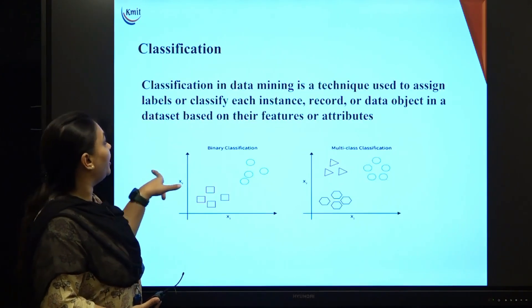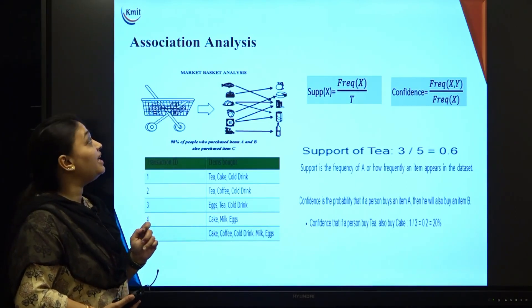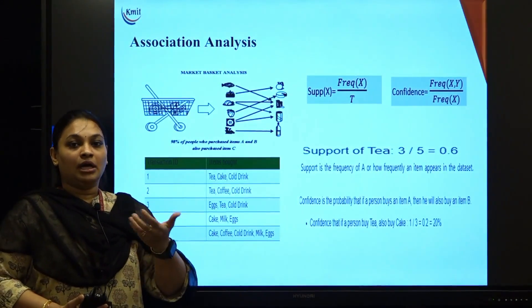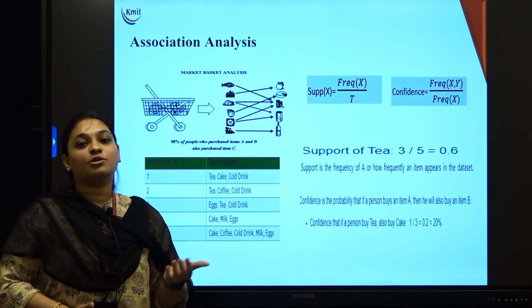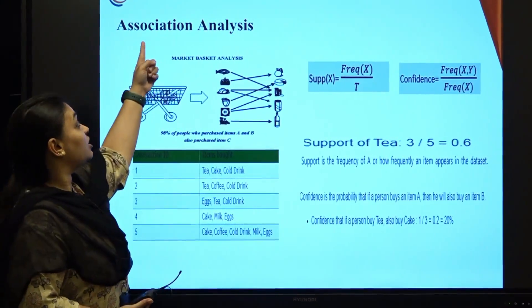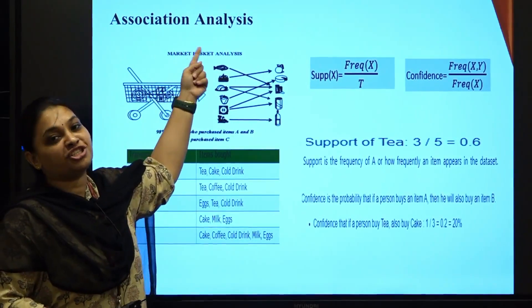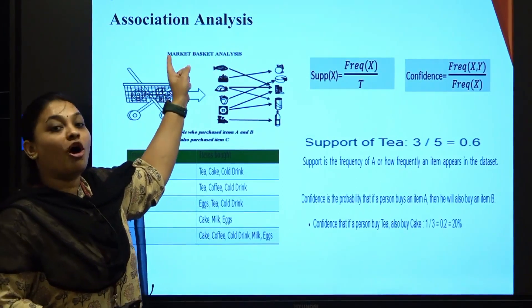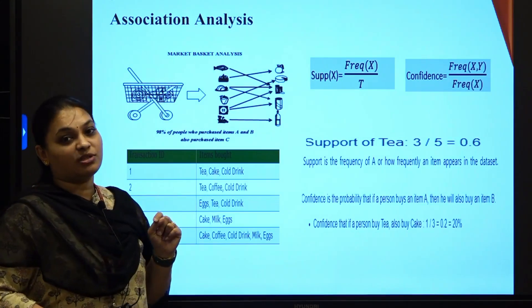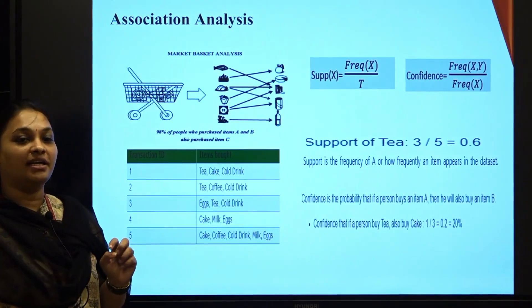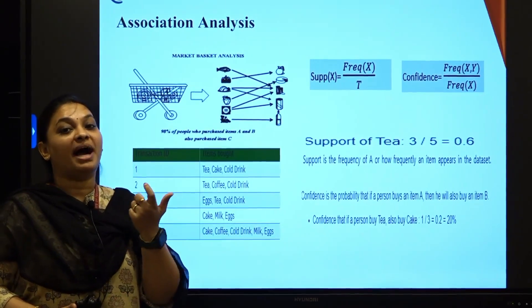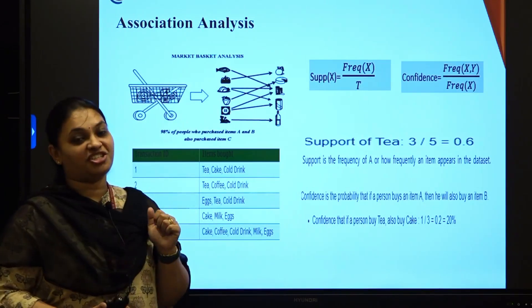Next, association analysis. What do we mean by association? The word association means relation. For example, I am associated with KMIT, you are associated with KMIT — that is a relation. In association analysis, we talk about the relationship between products or data items. The best example here is how frequently I am buying a product.